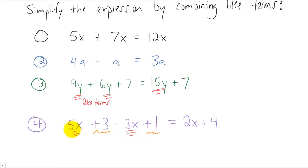So what we did there is we combined the like terms five x and negative three x to give two x. And then we combine the like terms positive three and positive one to give four.